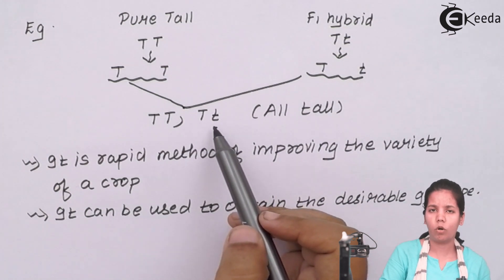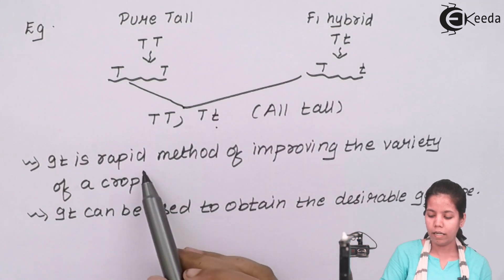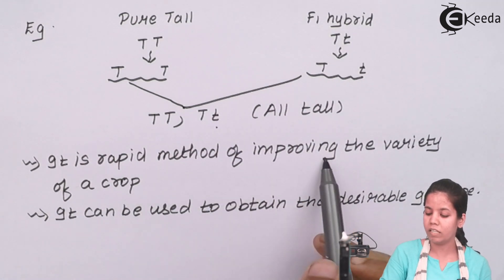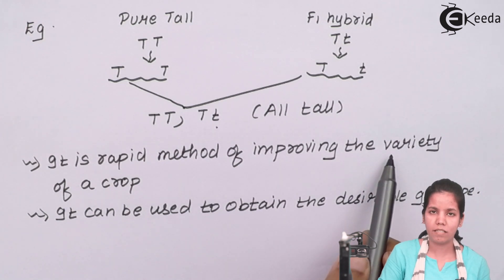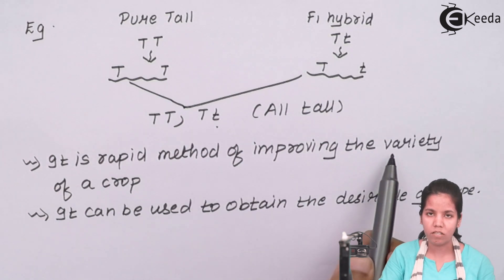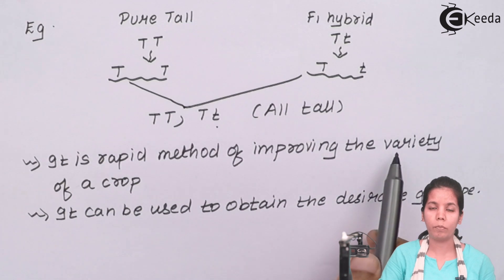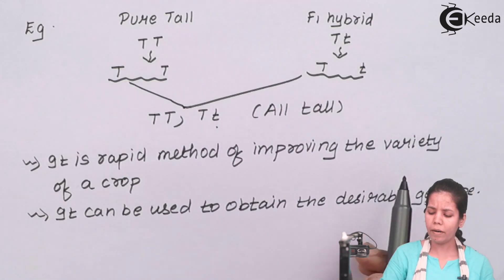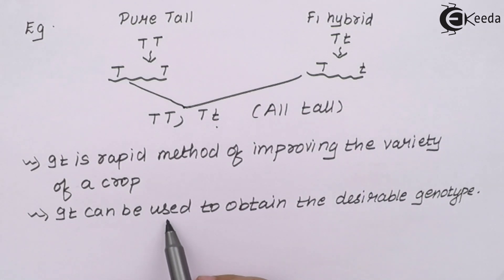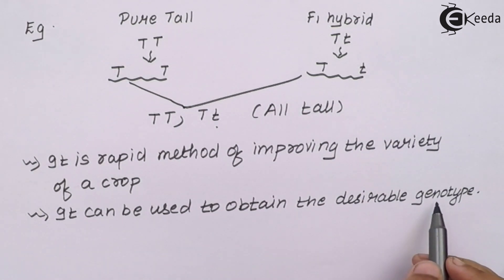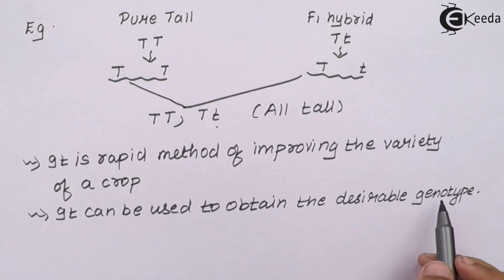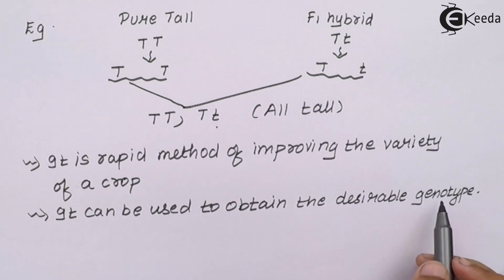The two main reasons to do back cross and test cross are: first, this method is a rapid method for improving the variety of a crop — you can take the best species and cross a pure species with another pure species to obtain the best trait. Apart from that, this method can also be used to obtain desirable changes in genotype. For example, you can choose any hybrid and cross it with a pure hybrid to observe the genotypic and phenotypic changes and cross-check various generations to reach a conclusion.